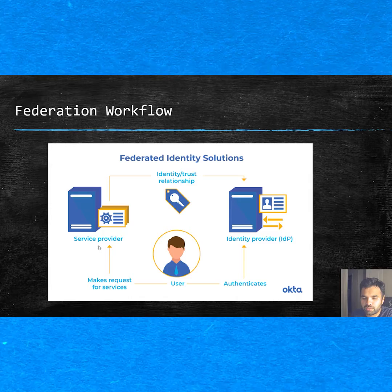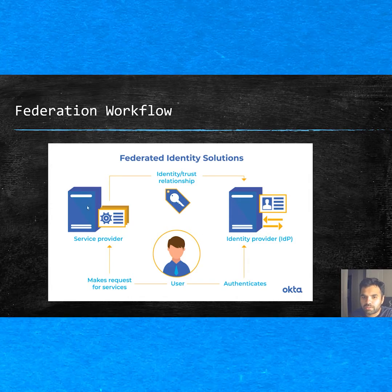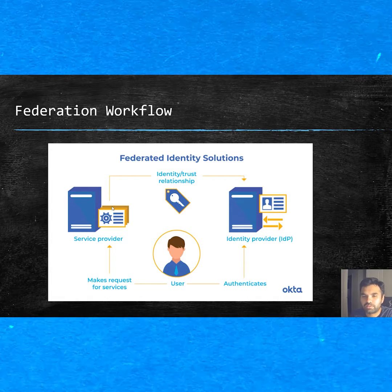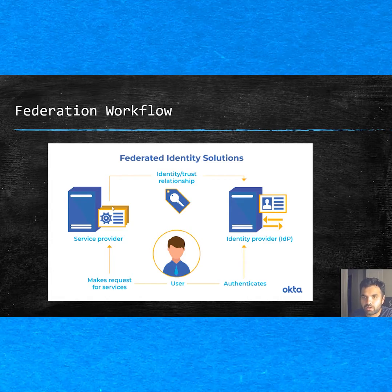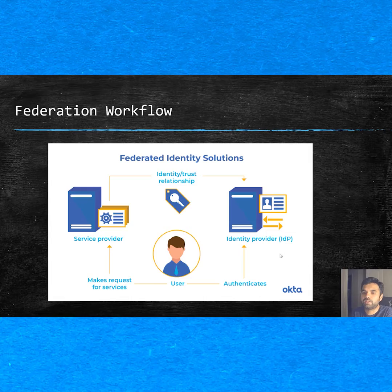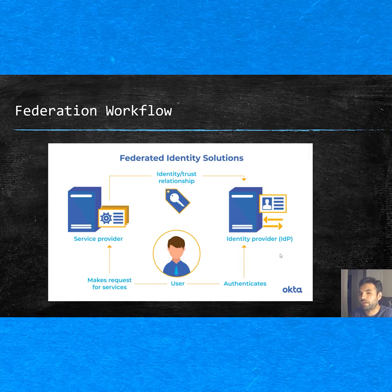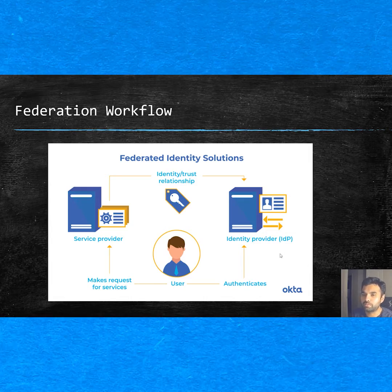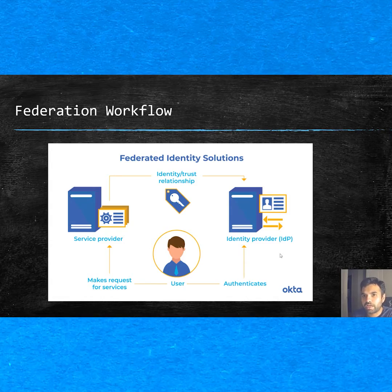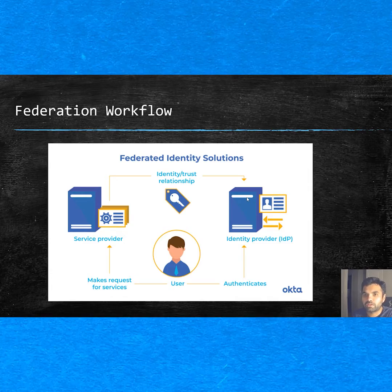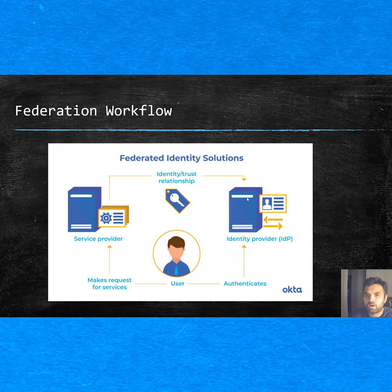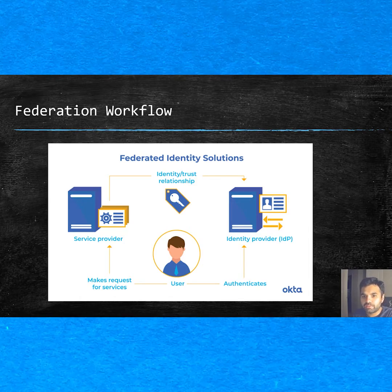Before all of this, what happens is: there could be multiple service providers — like 10 different applications in your corporate environment that you want to access. There's an identity provider; in our case it's Okta, but it could be your own identity provider or your own system. Whichever system authenticates the user is called the identity provider, and that's what tells you: okay, this user is John, this is Tom, or whoever the user is. So there is a relationship...